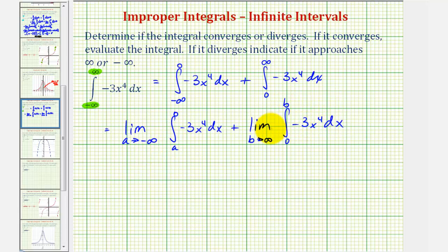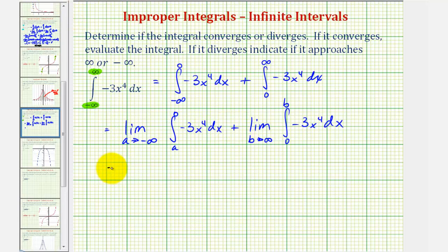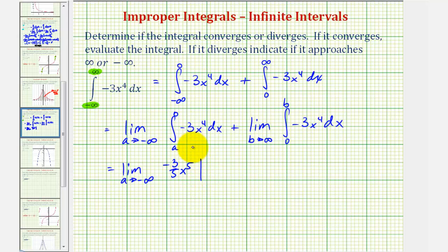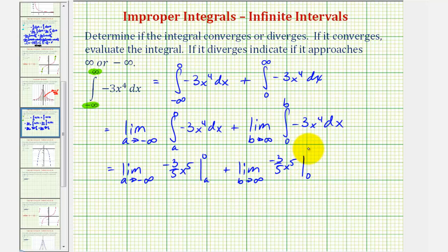Now we'll integrate, then determine the limits. We'll have the limit as a approaches negative infinity. When we integrate, we get negative three-fifths x to the fifth, evaluated from a to zero. Then plus the limit as b approaches infinity of negative three-fifths x to the fifth, evaluated from zero to b.